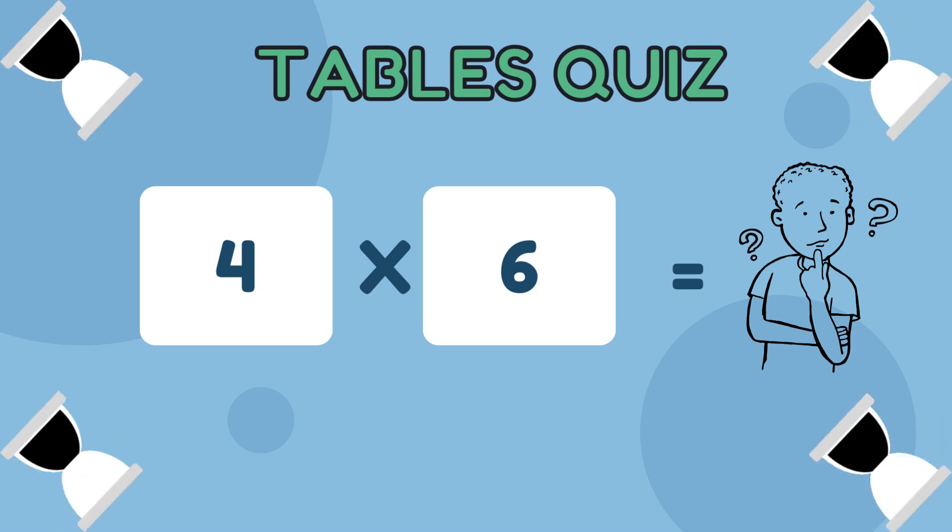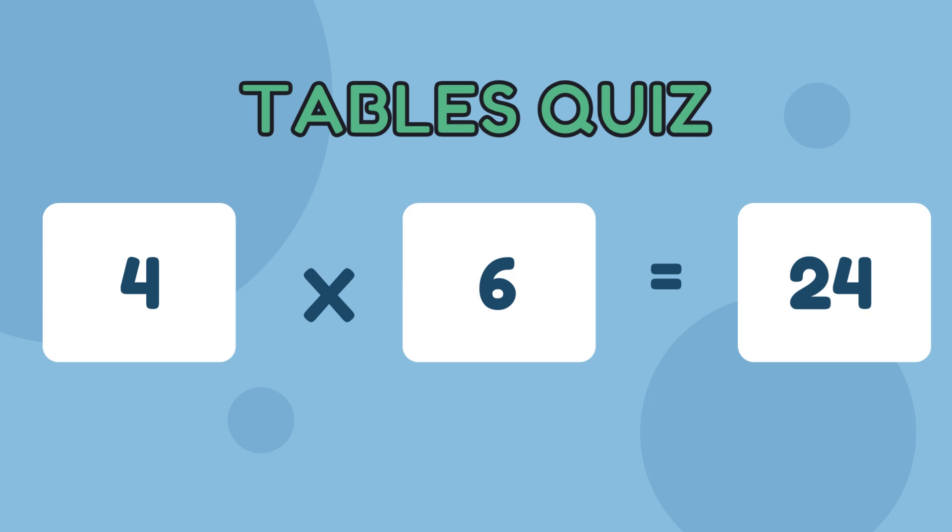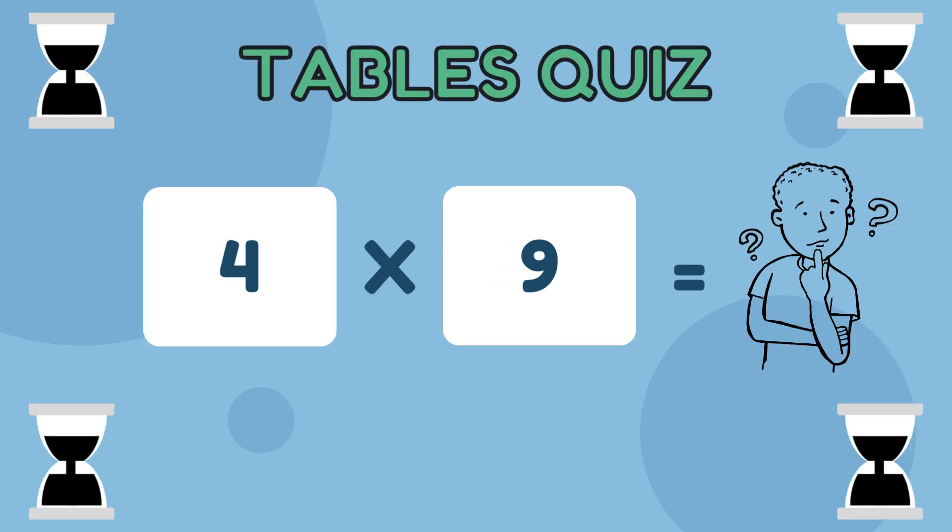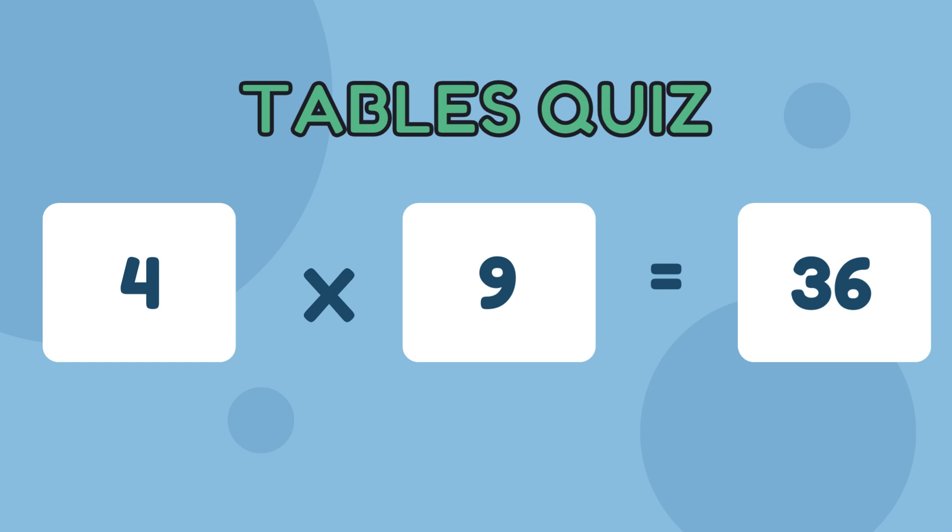Four sixes are... 24, yeah it's correct, well done. Four nines are... time's up. Four nines are 36.